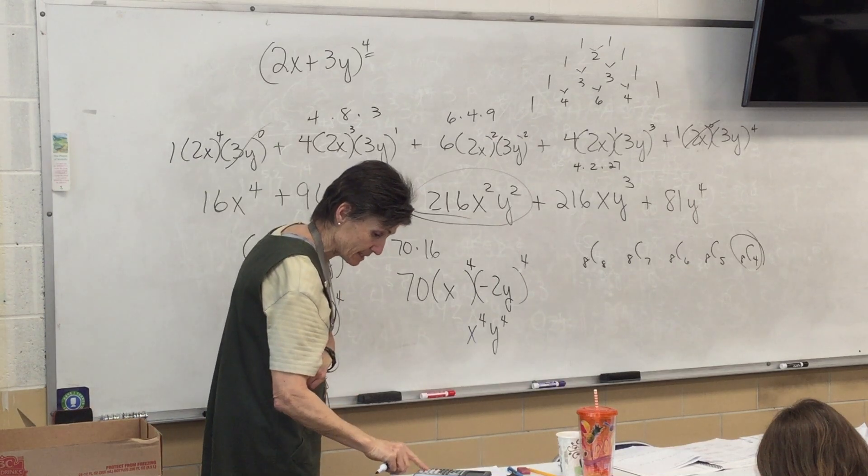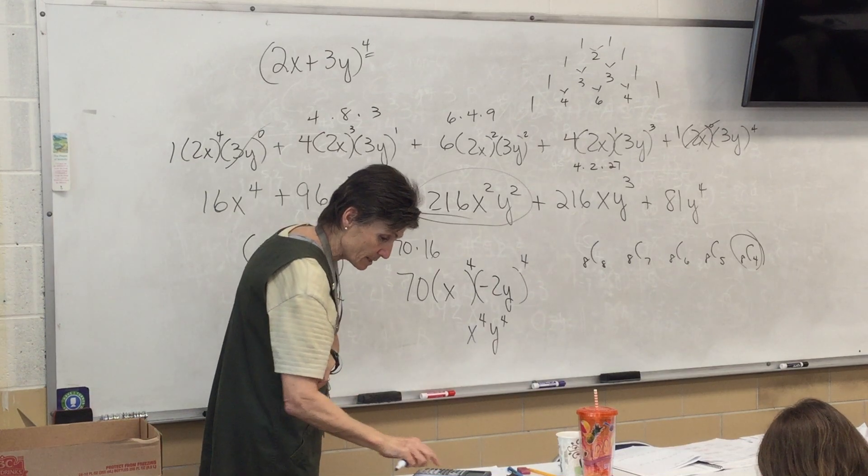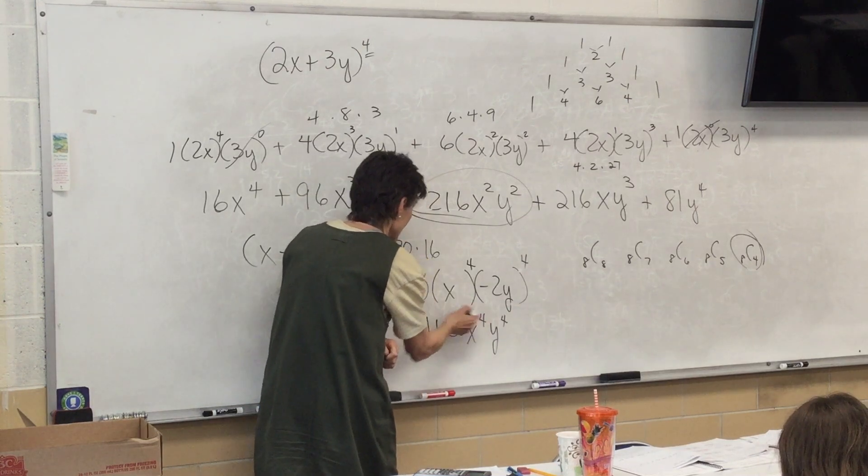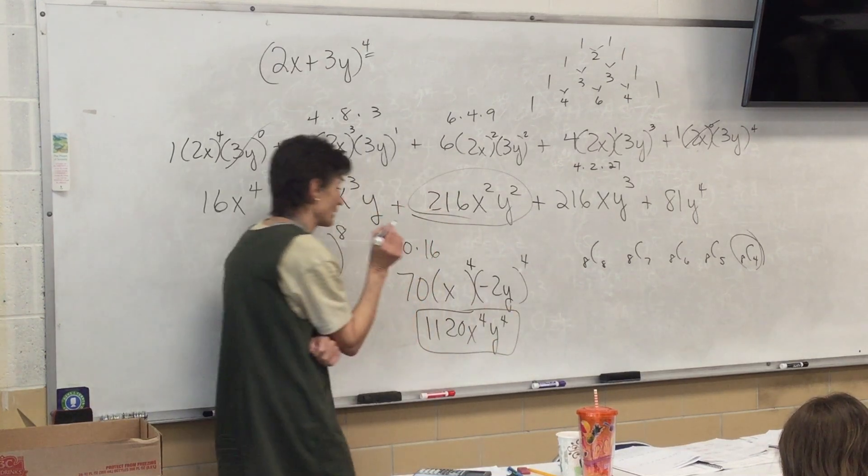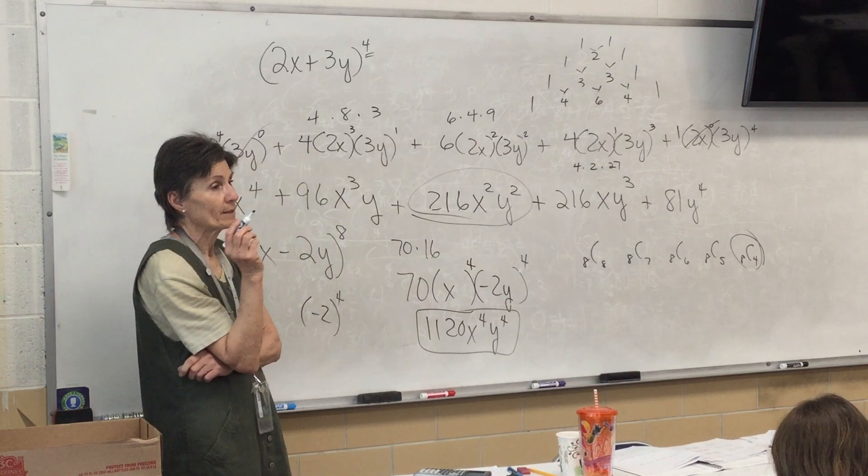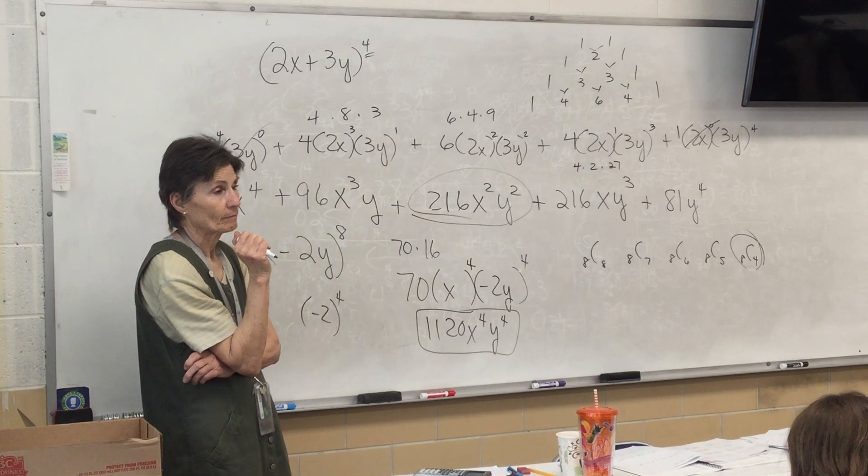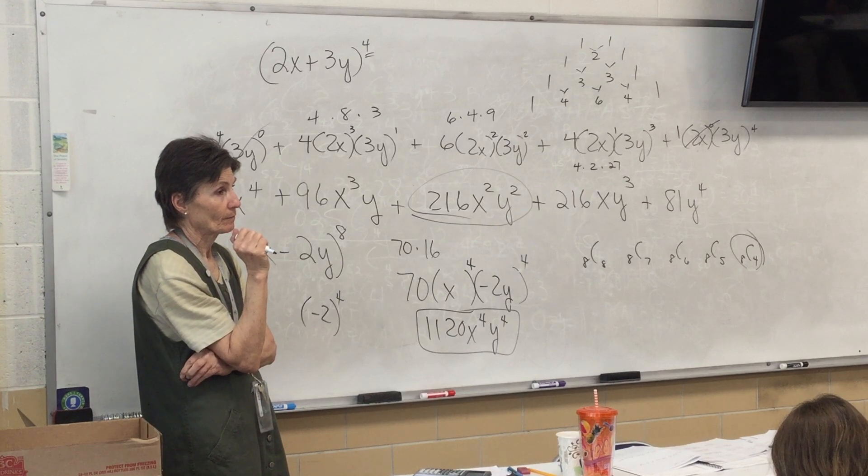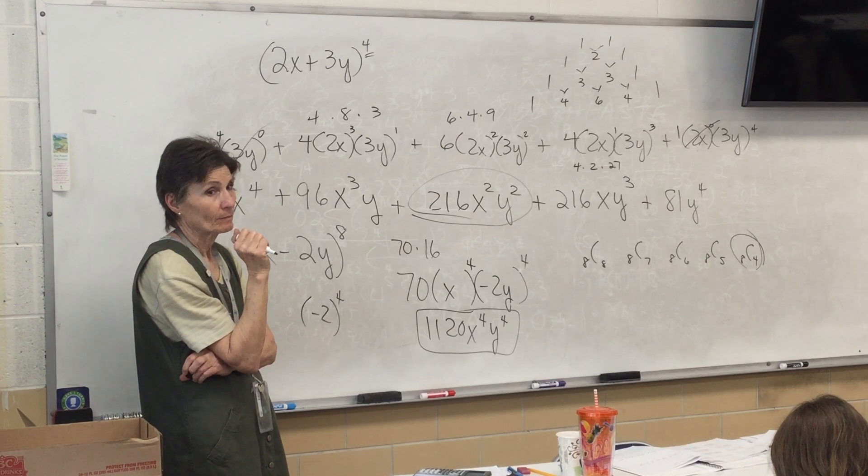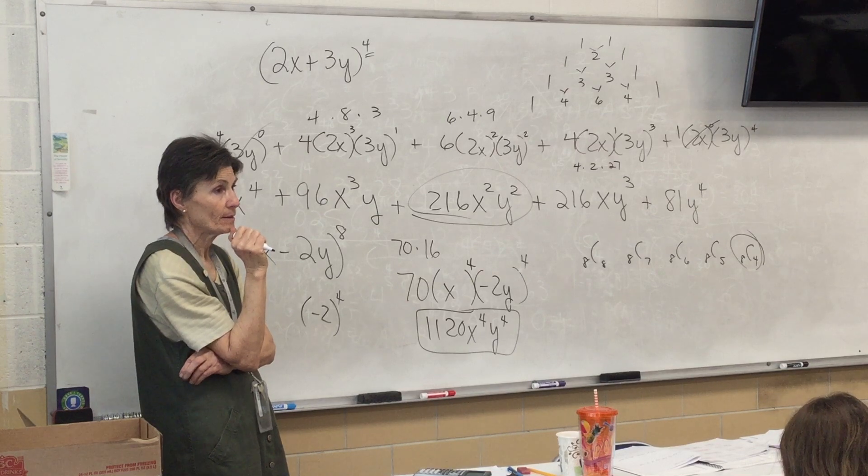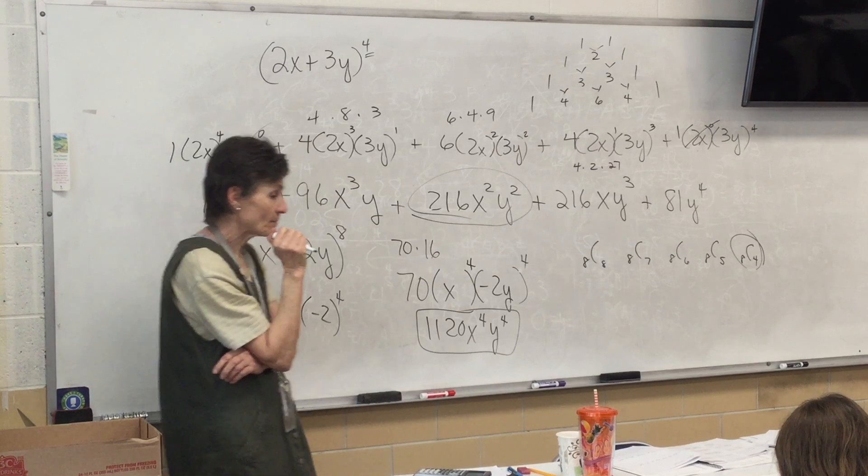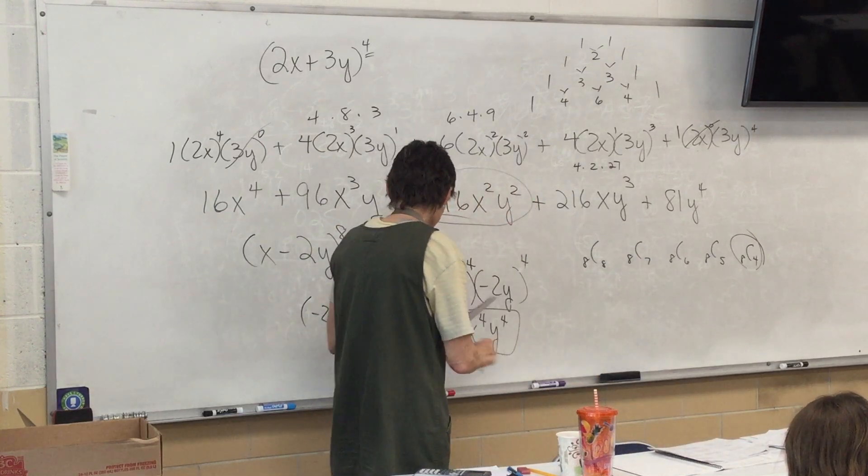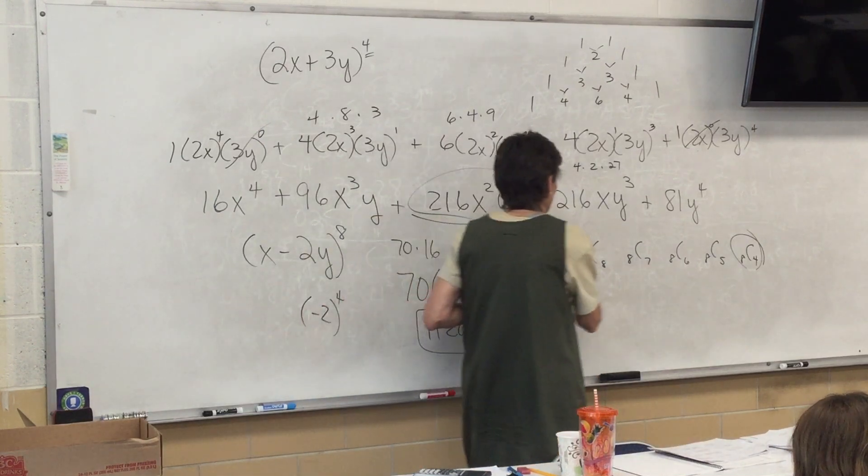If you're going to type it in, put it in right, it's 16. So, 70 times 16 is 1120. So, our answer is 1120 X to the 4th, Y to the 4th. And if some of you are tuning me out, please don't. You're not even well on this test.